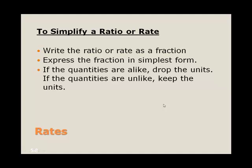To simplify a ratio or rate, we want to write the ratio or the rate as a fraction, express the fraction in simplest form. And then the usual rules are, if the quantities are the same, we drop the units, and we just take a look at the numbers, like in dollars per dollars. If the quantities are different, then we keep the units, so that we can take a look at the units, how the units change as in miles per gallon.